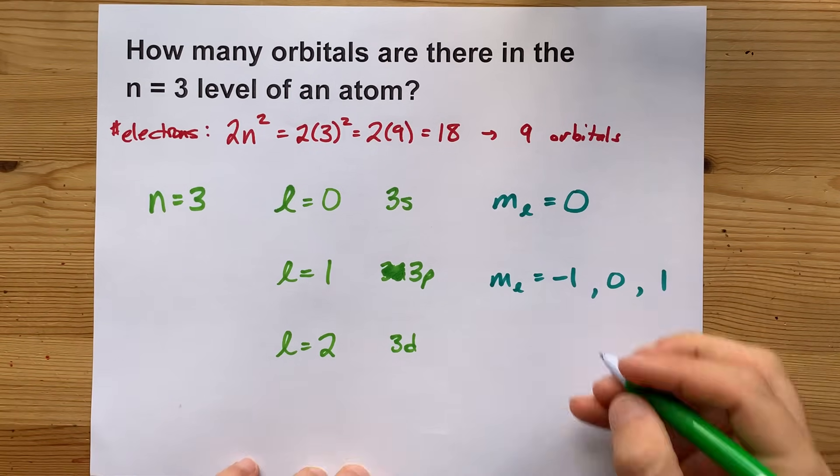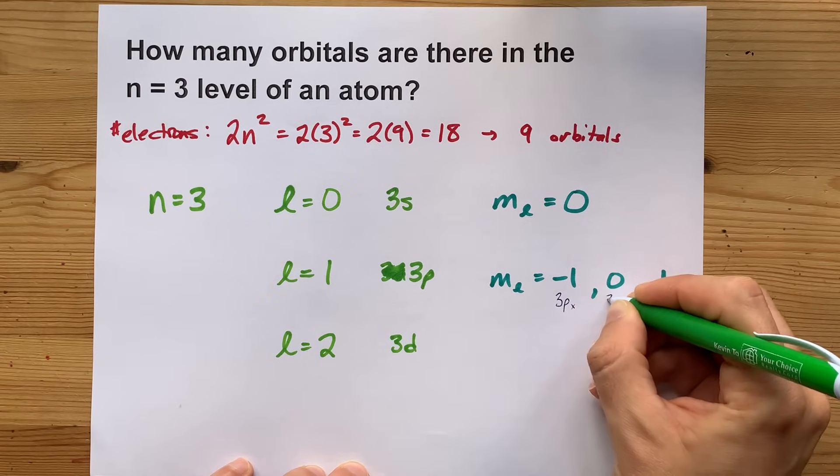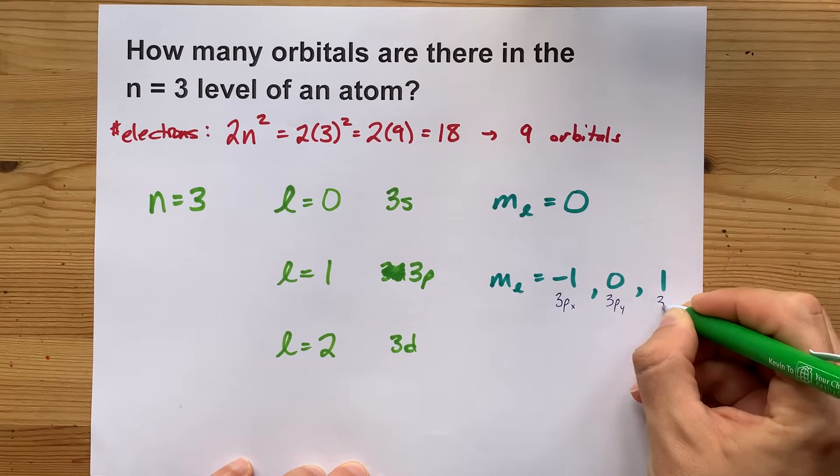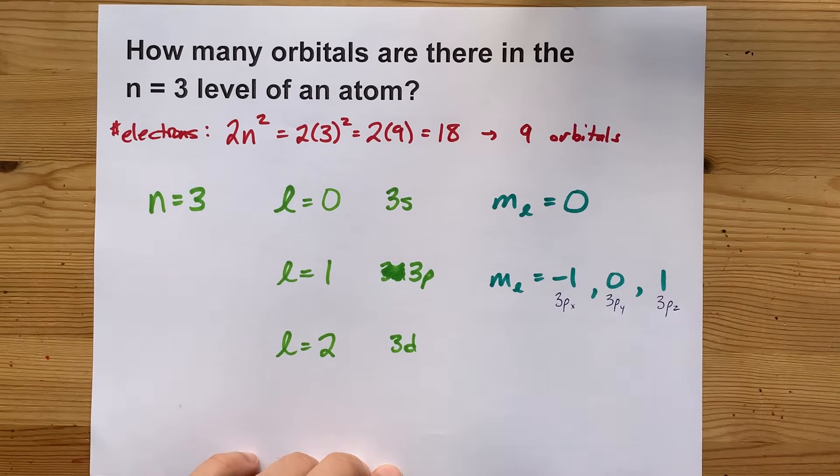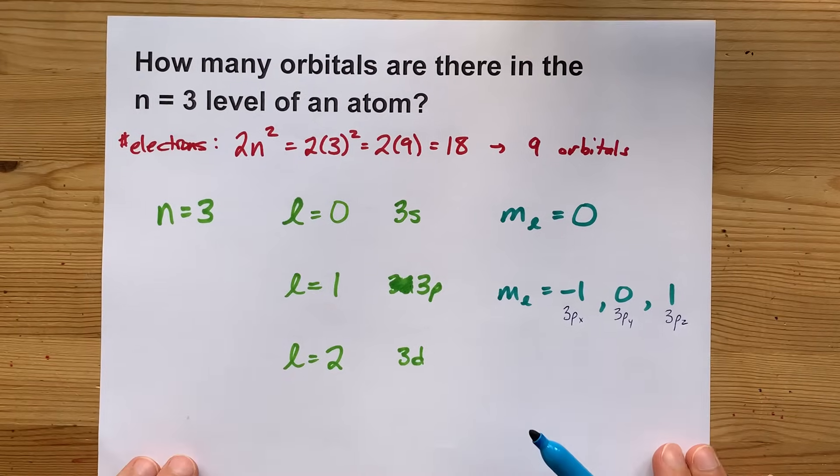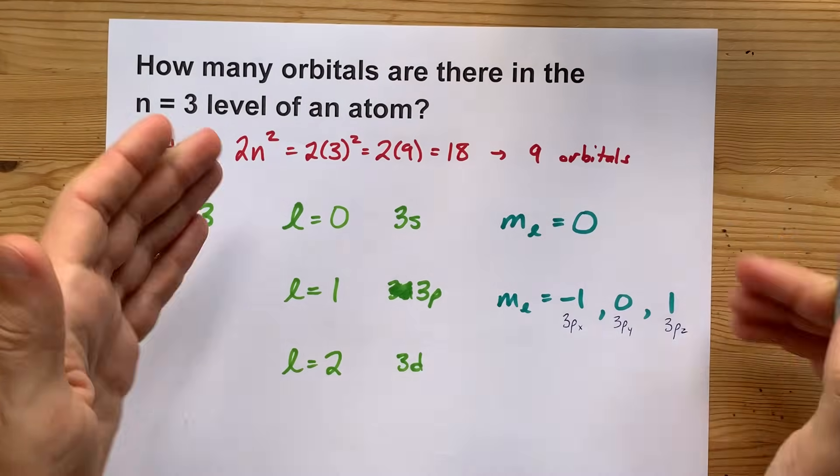That shouldn't be a surprise if you know about the 3px, the py orbital, and the pz orbital. These all look like dumbbells and they sit along each of the axes.